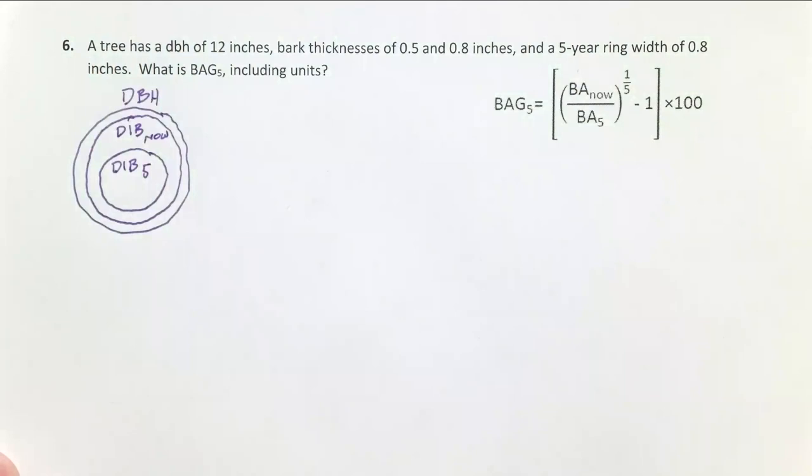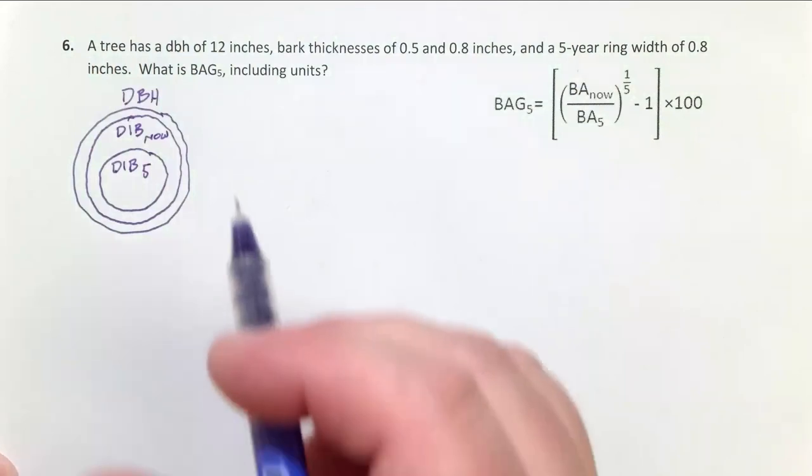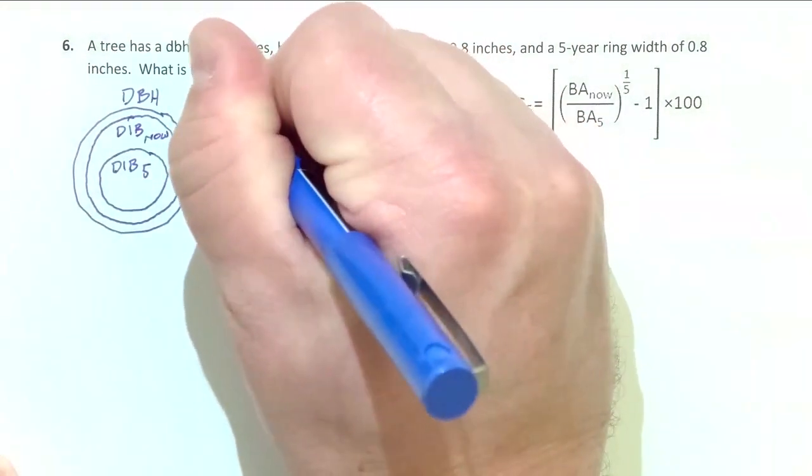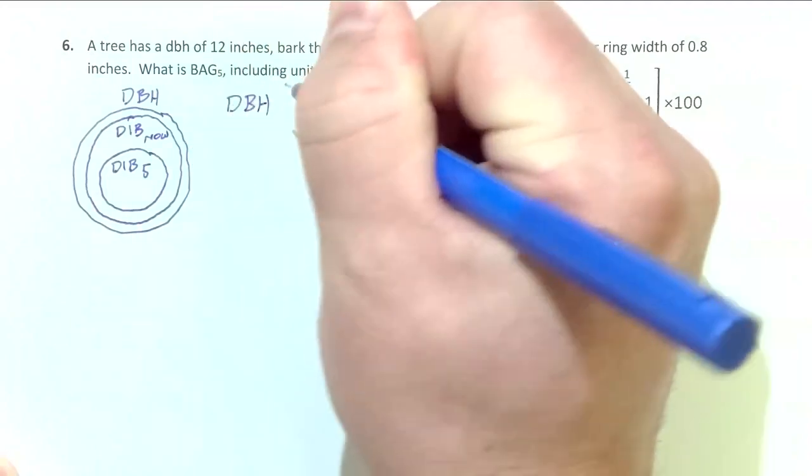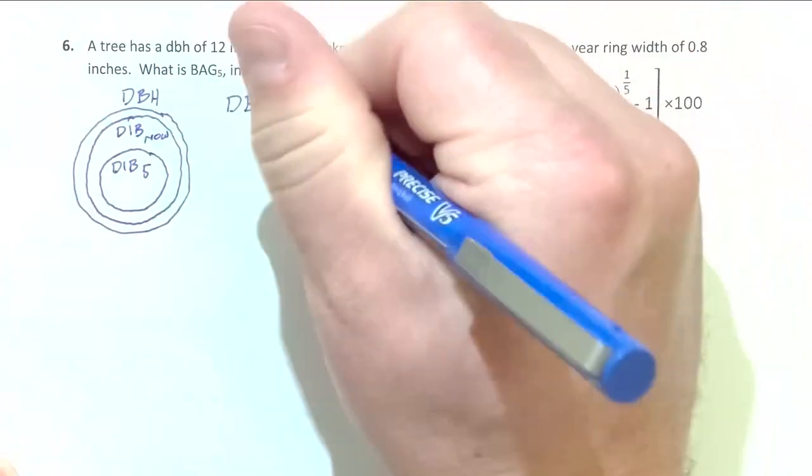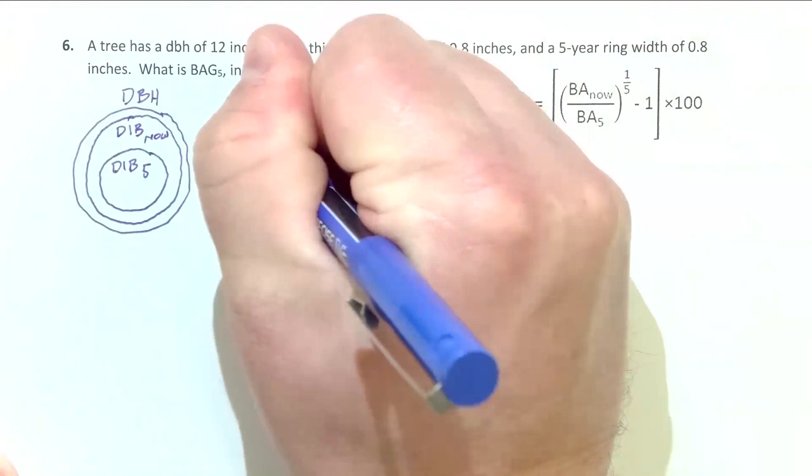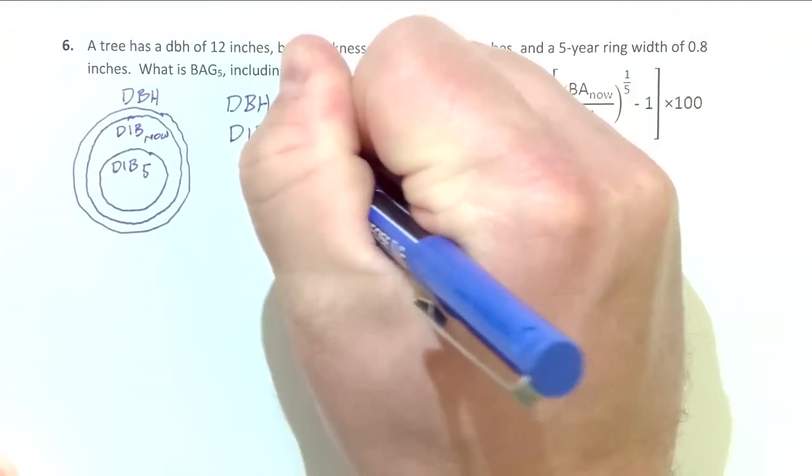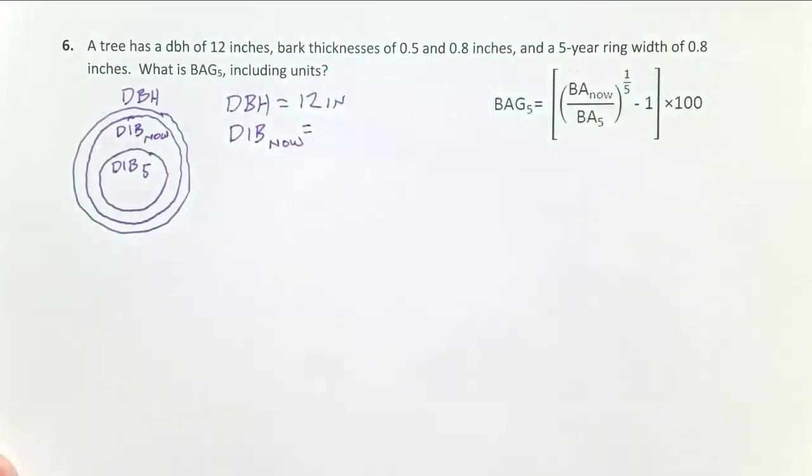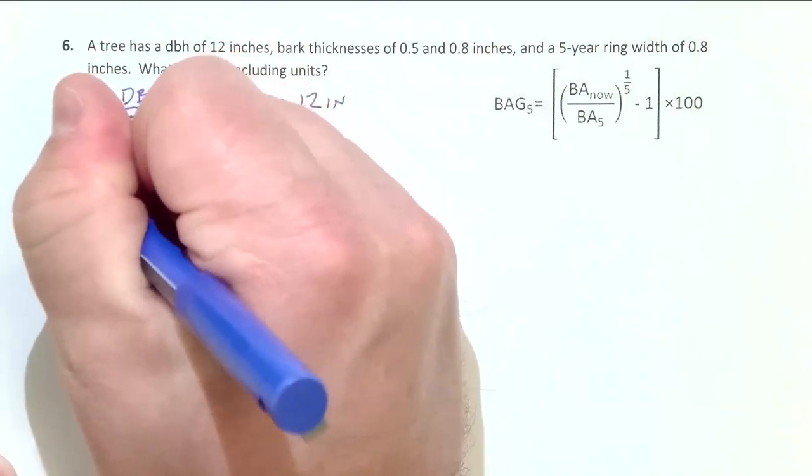As we look at this problem, our DBH now—we really can't get a deviation in the past because you don't know what the bark thickness was—equals 12 inches.